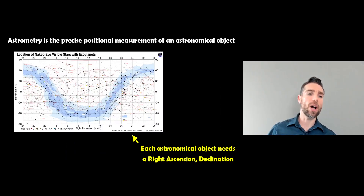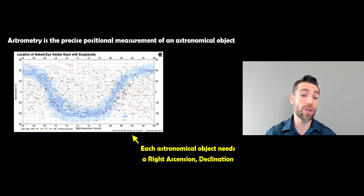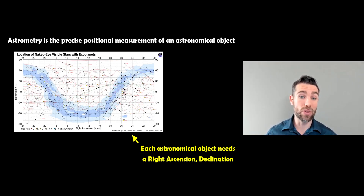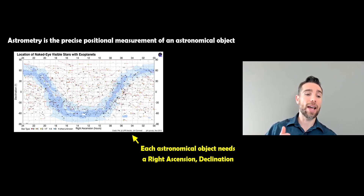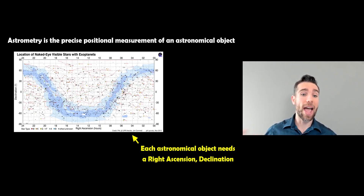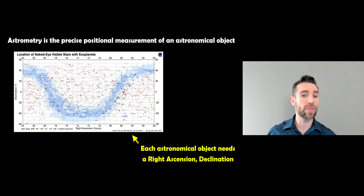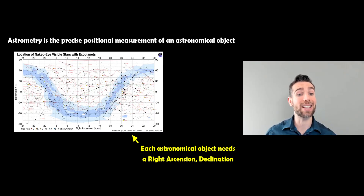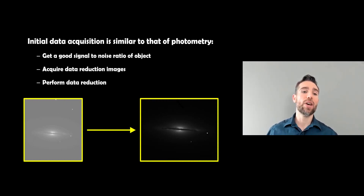So what is astrometry? Astrometry is the precise measurement of an astronomical object. Here you've got the full sky of basically stars — with exoplanets really, but it could be anything — and they all need to have a sky coordinate: right ascension and declination. If you make a new discovery — a new star, an asteroid, any new astronomical object — it needs to have a precise position in the sky and a coordinate associated with it.